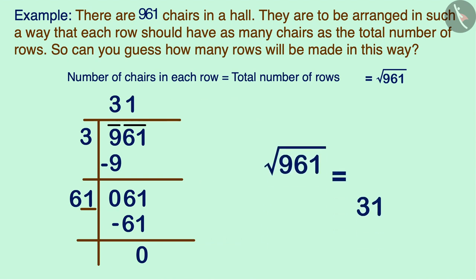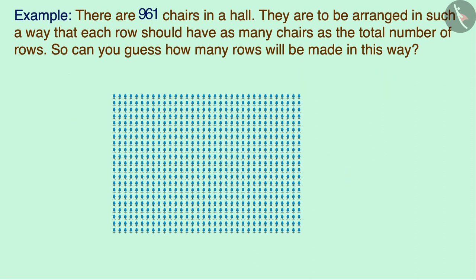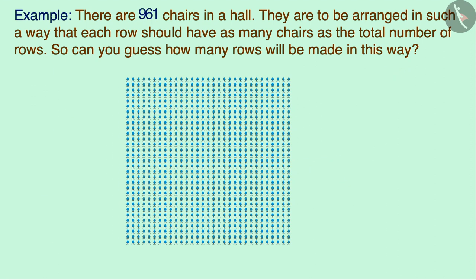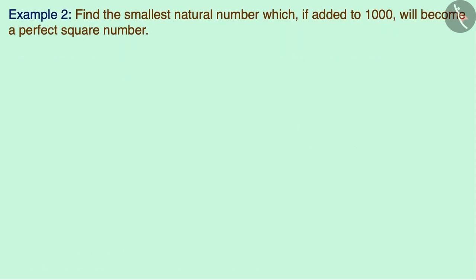Now there are no digits left in the given number, so we get 31 as the square root of 961. The hall will have a total of 31 rows of chairs, and each row will have 31 chairs.